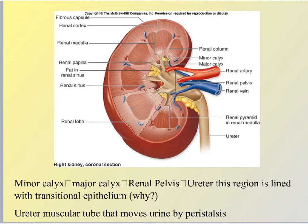We just followed the pathway of filtrate moving down those collecting ducts and making its way towards the minor calyx. In all of these medullary pyramids, collecting ducts drain filtrate into the minor calyx. When that filtrate finally makes its way into the minor calyx, that's when we call it urine. The reason we don't call it urine prior to that is because before dripping into the minor calyx, that filtrate can still be modified — ions can be secreted into it, or water and ions can still be reabsorbed. But once that filtrate drips into the minor calyx, no more modification can occur, and it is officially urine.